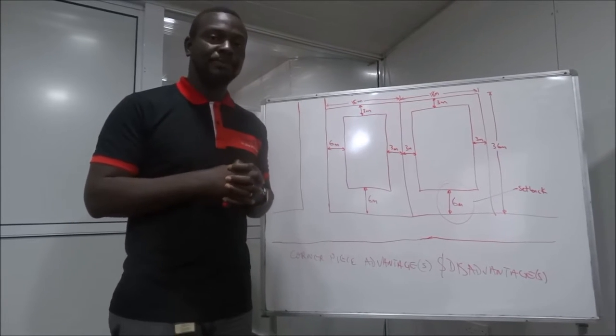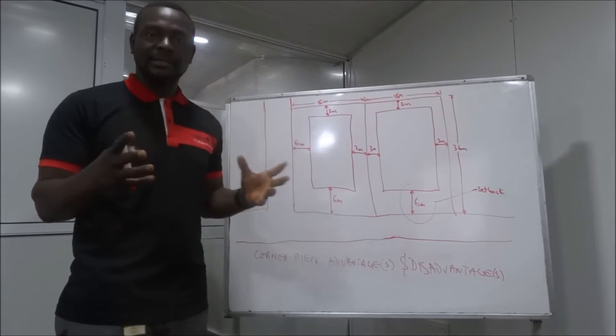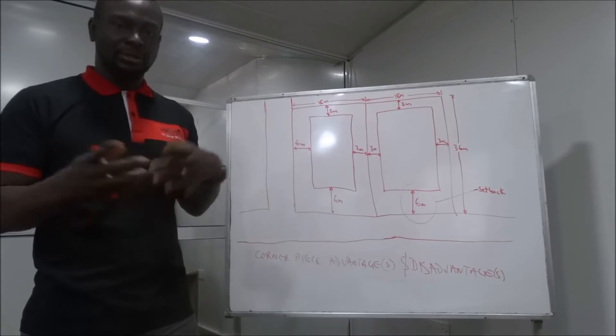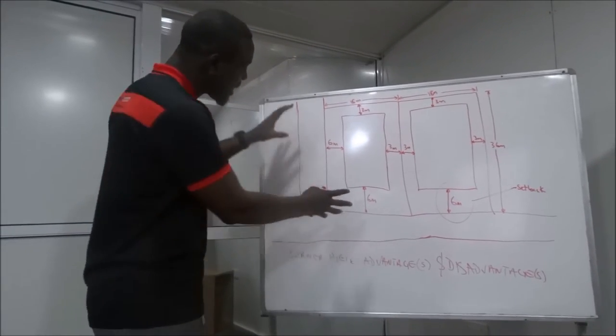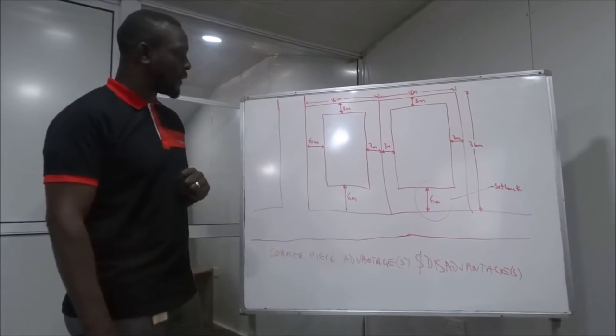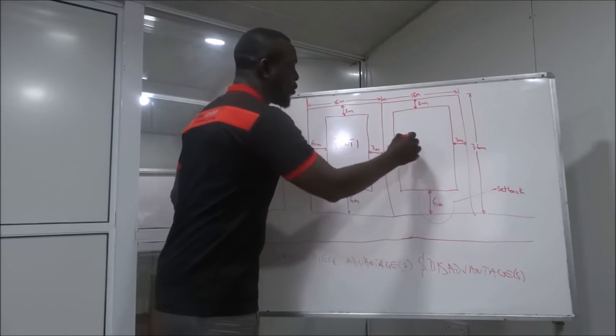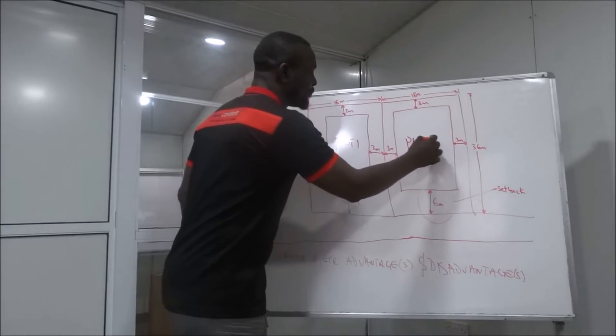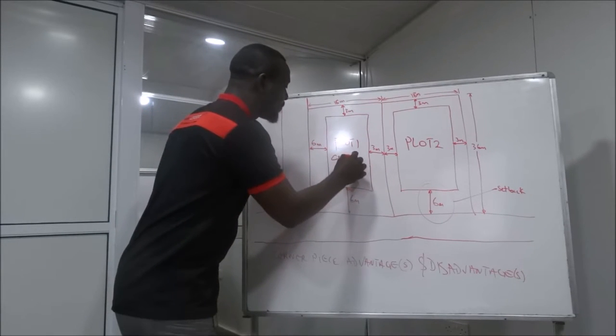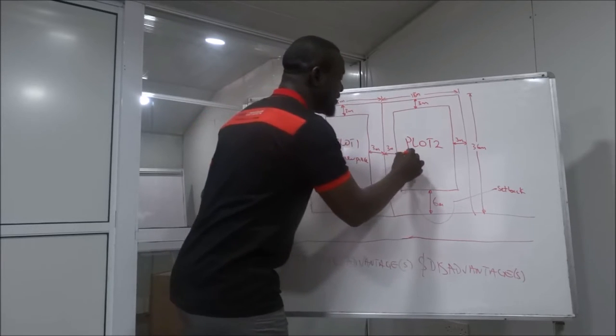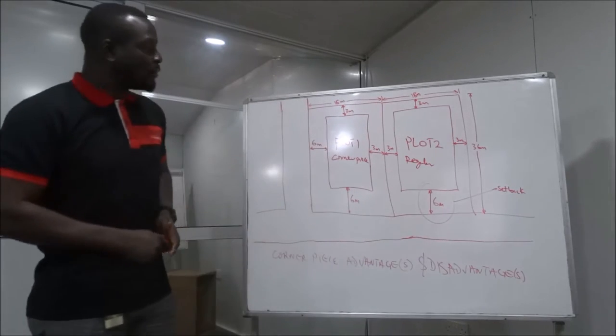So, I would encourage anybody that does land transactions, real estate land transactions, to listen and watch this video and get some basic knowledge so that it can inform your decision. Now, I have here a diagram of two plots of land. I will call this plot 1 and I will call this plot 2. Now, plot 1 is the corner piece. And this is the regular plot.